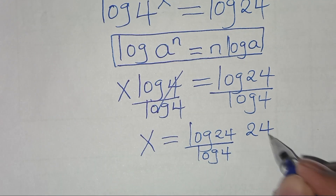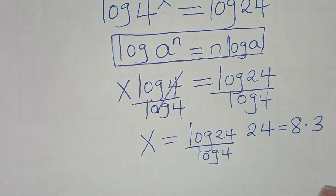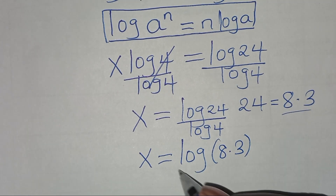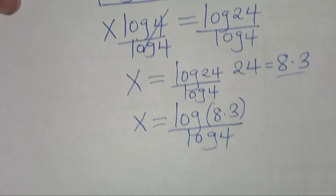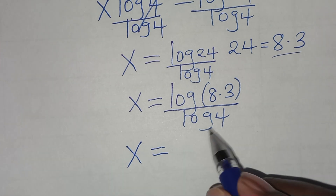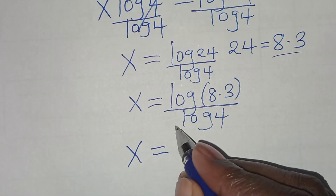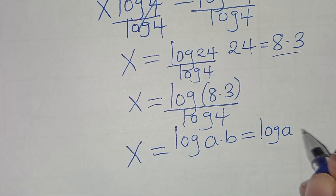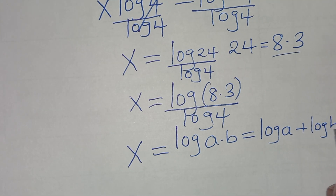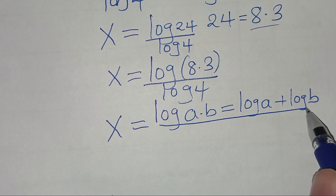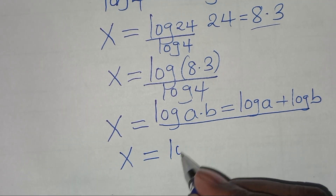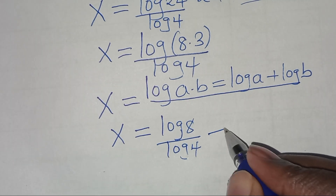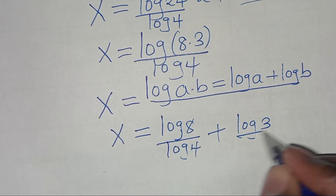We can express 24 as 8 times 3. Substituting this, we have x equal to log(8 × 3) divided by log 4. Now, log(8 × 3) is in the form of log(a × b), which we can express as log a plus log b. Applying this logarithm product property, we have x equal to log 8 divided by log 4, plus log 3 divided by log 4.